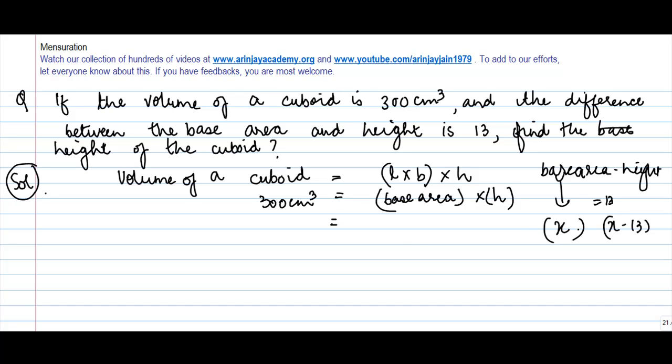So 300 centimeter cube is equal to x into x minus 13.